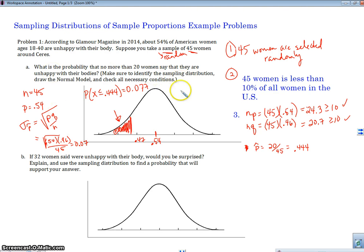All right. So that's a problem that we might see on an AP exam or on some sort of stats worksheet. So let's look at number two, and then we'll wrap this up. So if 32 women were unhappy with their body, would we be surprised? Well, how do we know if something is surprising?